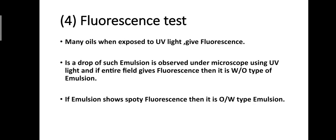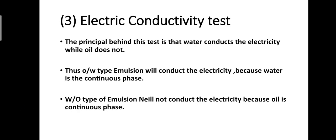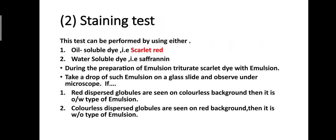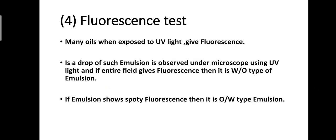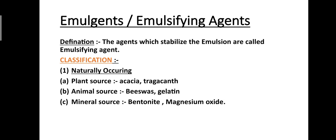Fluorescence test: Many oils, when exposed to UV light, give fluorescence. If a drop of emulsion is observed under a microscope using UV light and the entire field gives fluorescence, it is a W/O type emulsion — oil is the continuous phase. If the emulsion shows spotty fluorescence, it is an O/W type emulsion. These are the four identification tests.